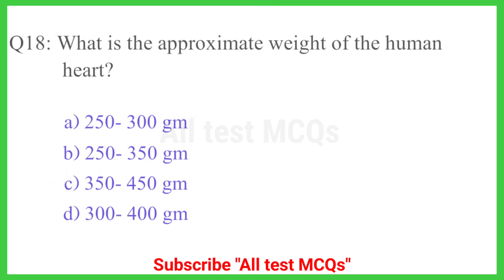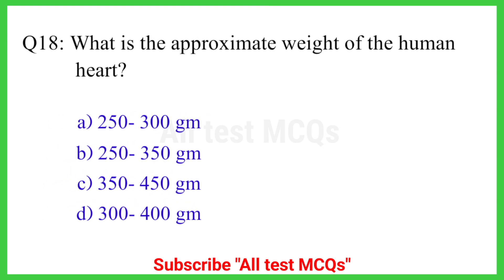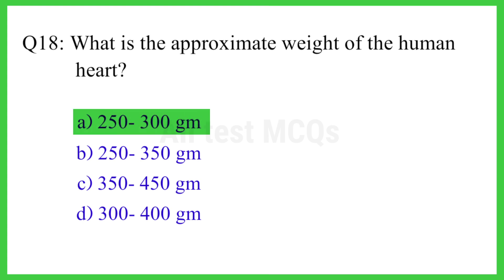Q18. What is the approximate weight of the human heart? The right answer is option A. 250 to 300 grams.